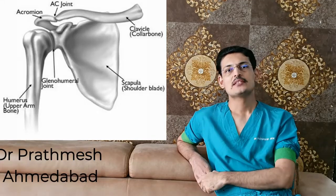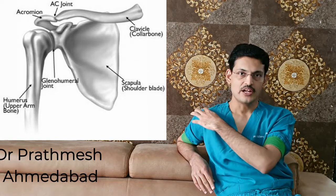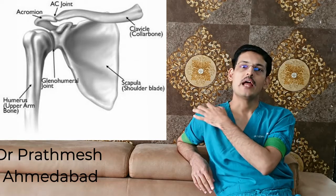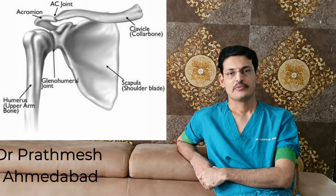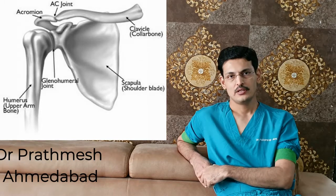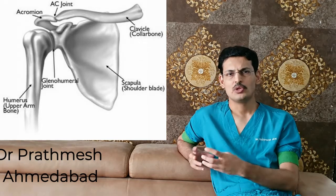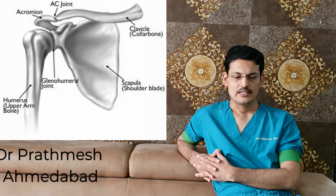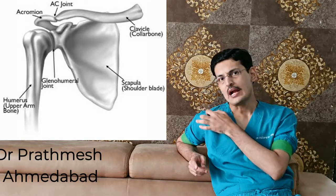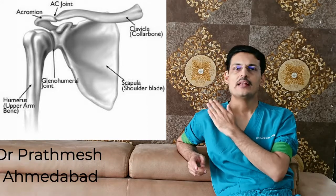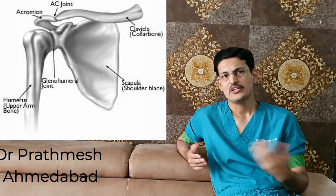The size of this joint is 9 millimeters in width and 19 millimeters in length. It is a diarthrodial joint with very limited movement — only 5 to 8 degrees. This joint has a fibrocartilaginous disc in between, and it is prone to a lot of injury.